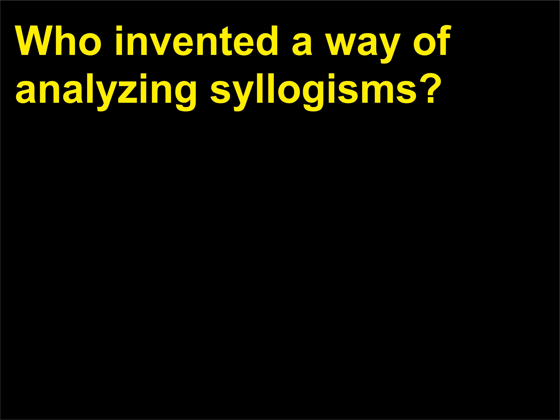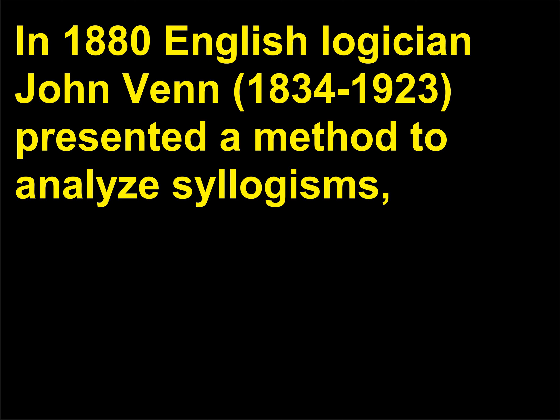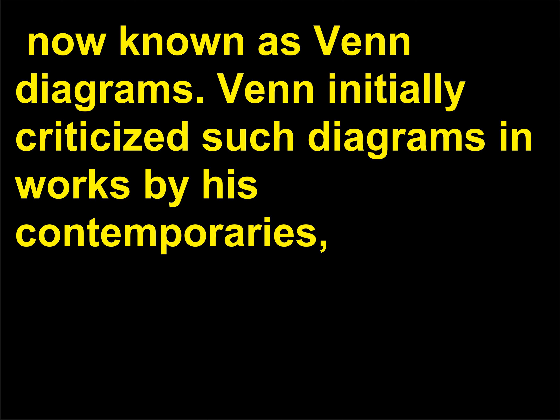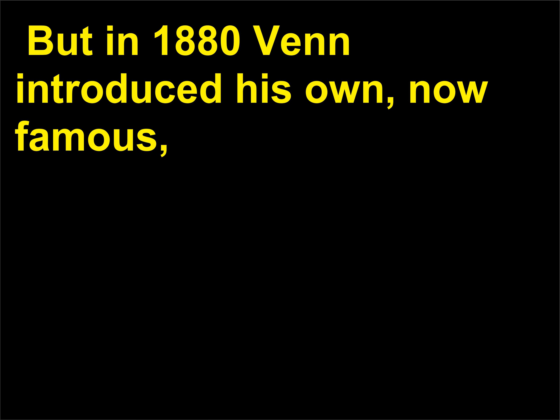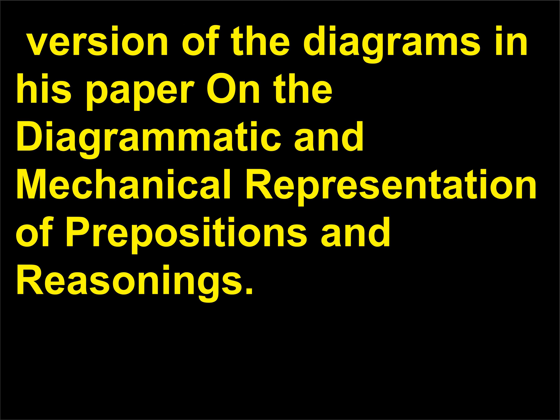Who invented a way of analyzing syllogisms? In 1880, English logician John Venn (1834–1923) presented a method to analyze syllogisms, now known as Venn diagrams. Venn initially criticized such diagrams in works by his contemporaries, especially those of English mathematicians George Boole (1815–1864) and Augustus De Morgan (1806–1871). But in 1880 Venn introduced his own, now famous, version of the diagrams in his paper 'On the Diagrammatic and Mechanical Representation of Propositions and Reasonings.'